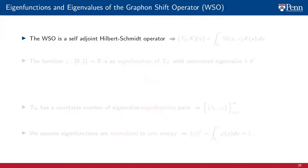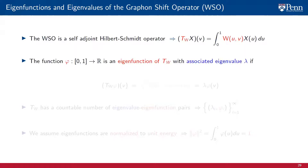By definition, a graphon W is a bounded and symmetric measurable function. That makes it possible for us to associate with it the graphon shift operator TW, which is a self-adjoint Hilbert-Schmidt operator. This operator is such that when applied to the signal X, it produces the signal TWX whose value at V is the integral of the product between the kernel of the operator and the function X. From this definition, we conclude that the operator TW is bounded, because the kernel — the graphon W — is bounded. We also conclude that the operator TW is self-adjoint, because the graphon W is symmetric.